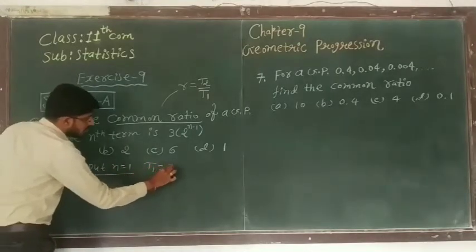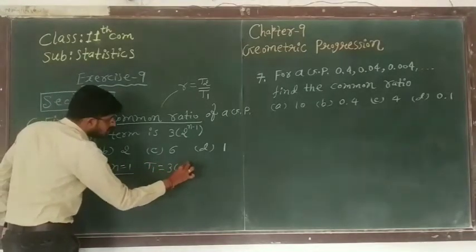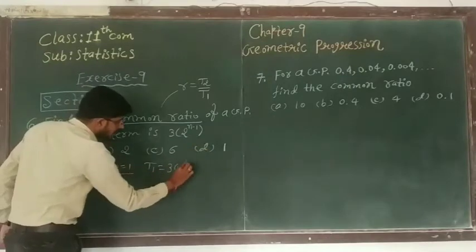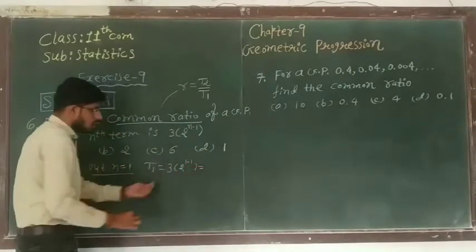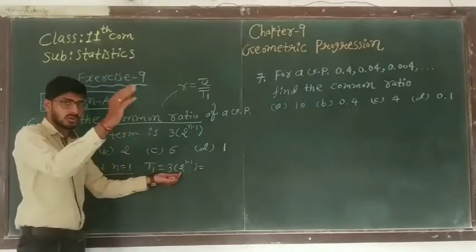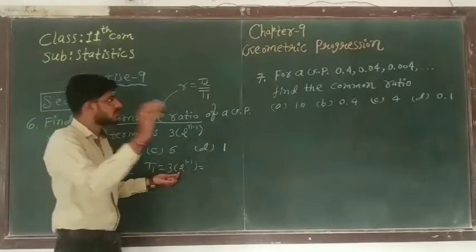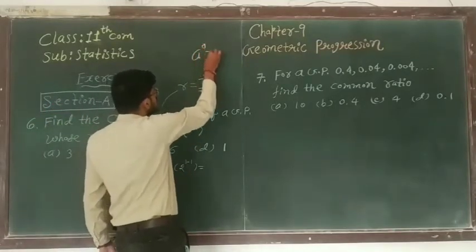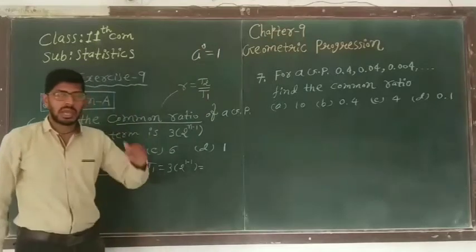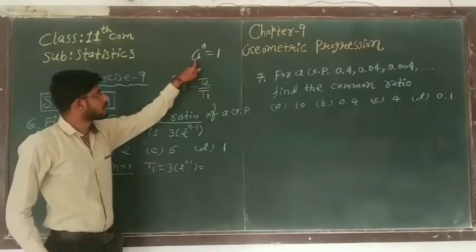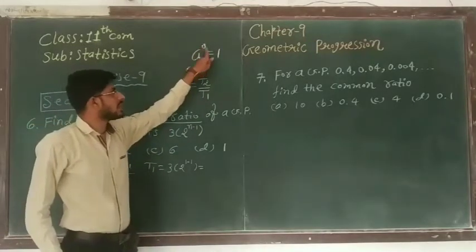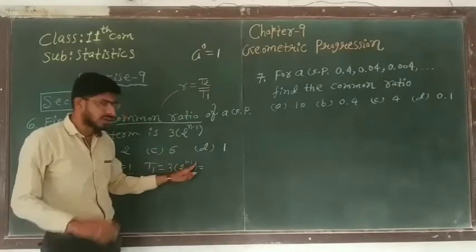So t1 equal to 3 into 2 raise to 1 minus 1. 2 raise to 0. Any number power 0 gives 1. So 2 raise to 0 will be 1. So 3 ones are 3.